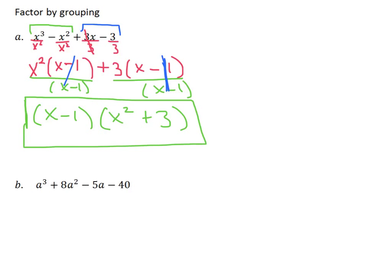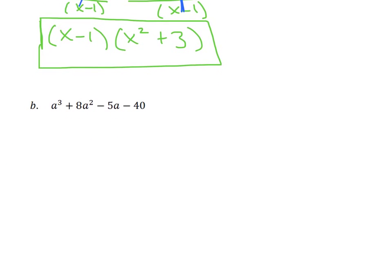It's a little strange, so let's try another one. The first thing we do is group the first two terms together and the second two terms together. Looking at a cubed and 8a squared, we can take out an a squared. Dividing each by a squared: a cubed divided by a squared is a, and 8a squared divided by a squared gives us a positive 8.